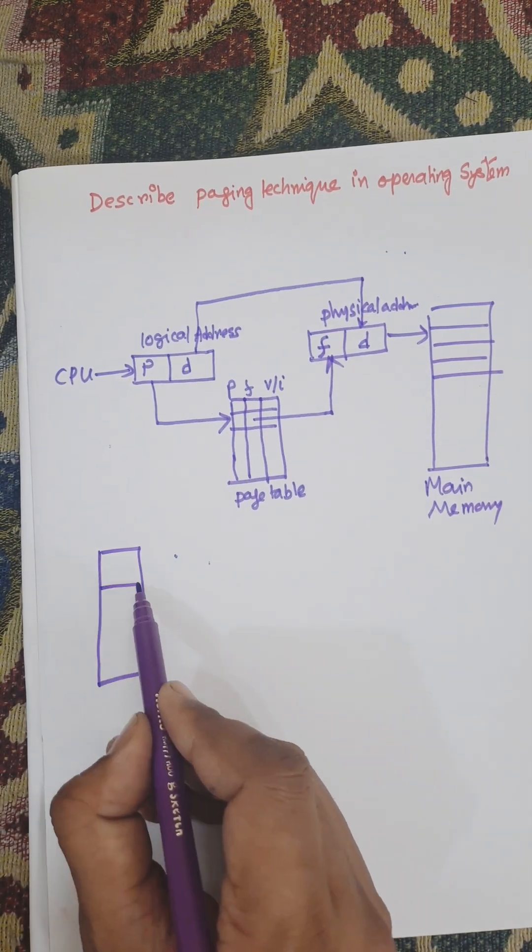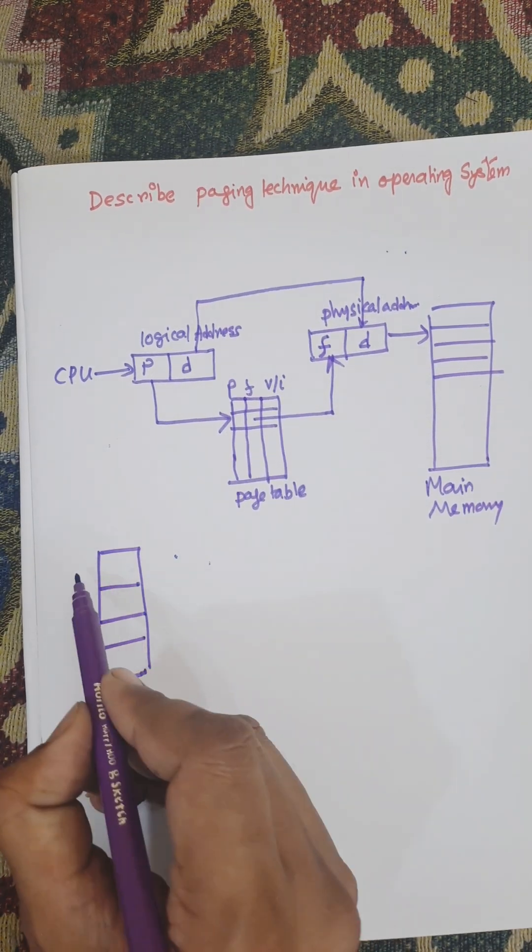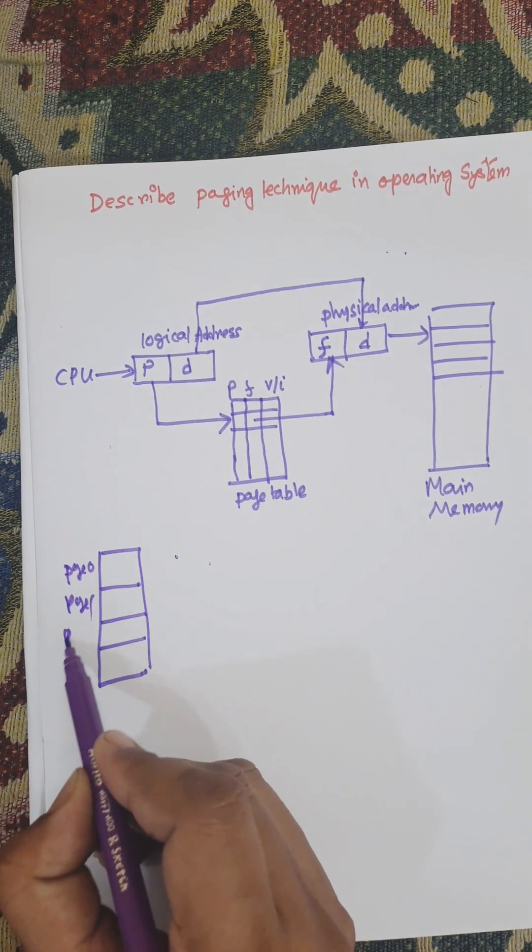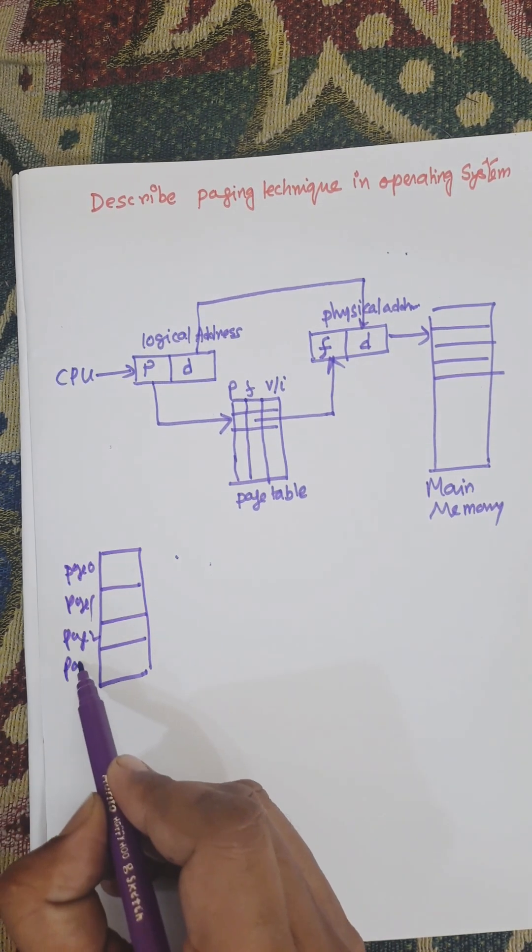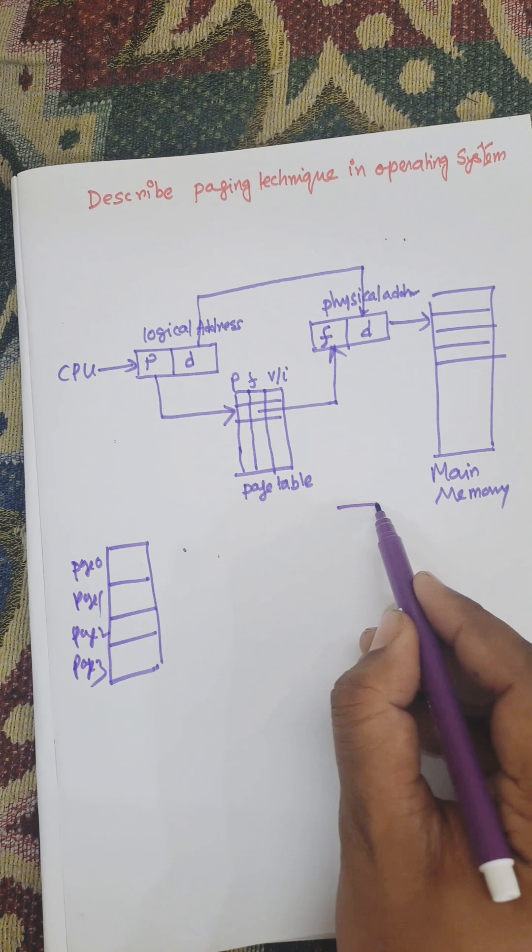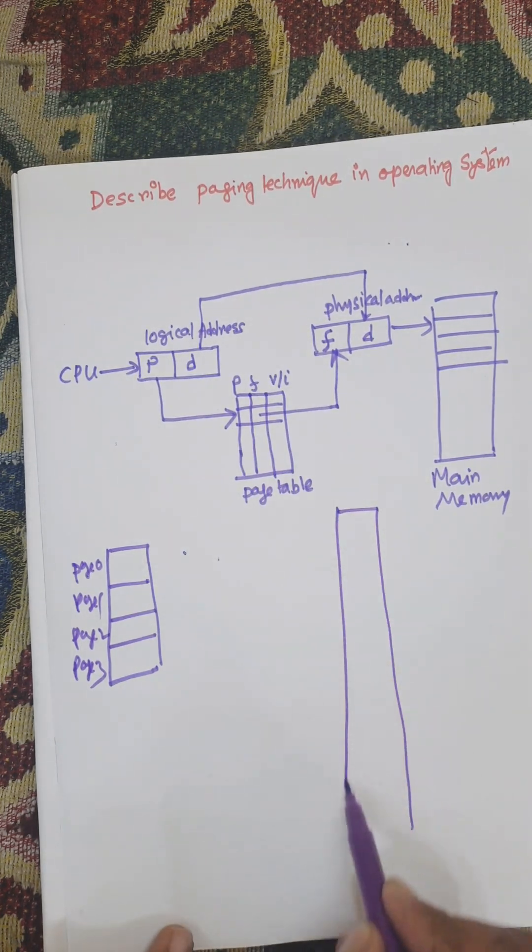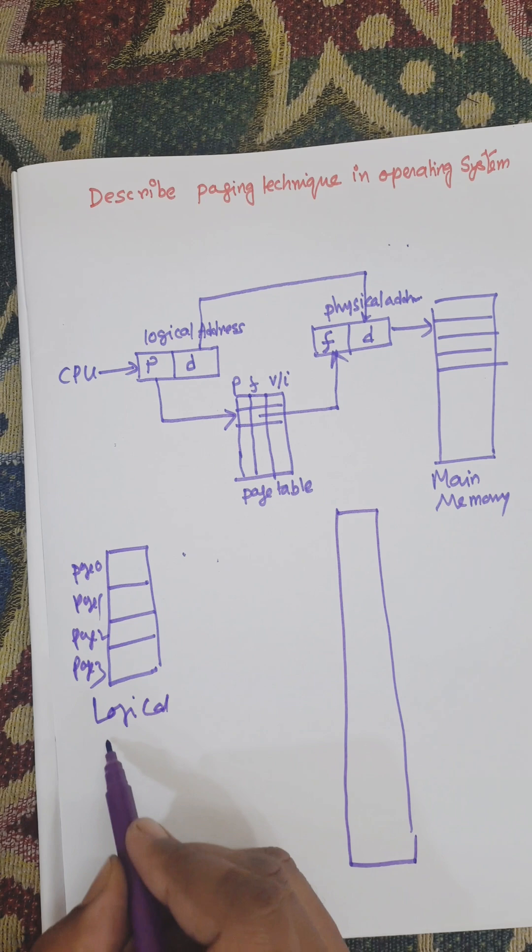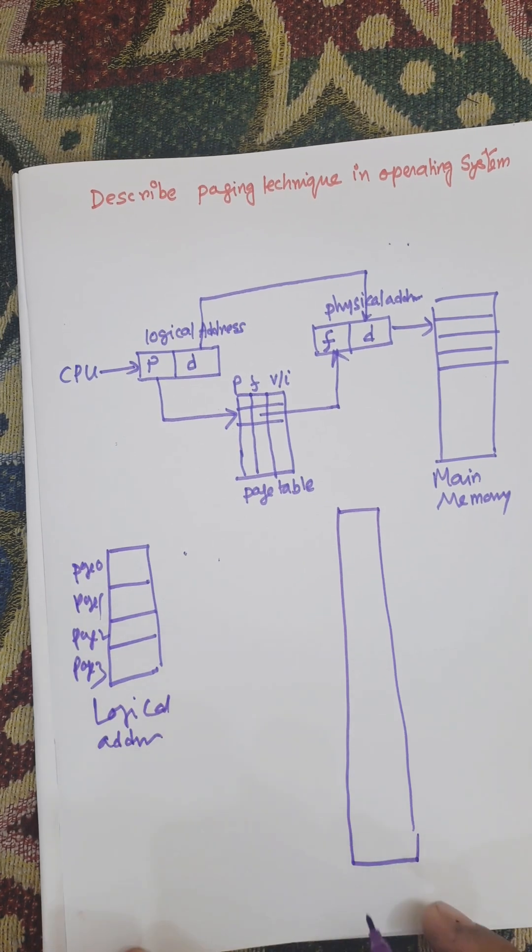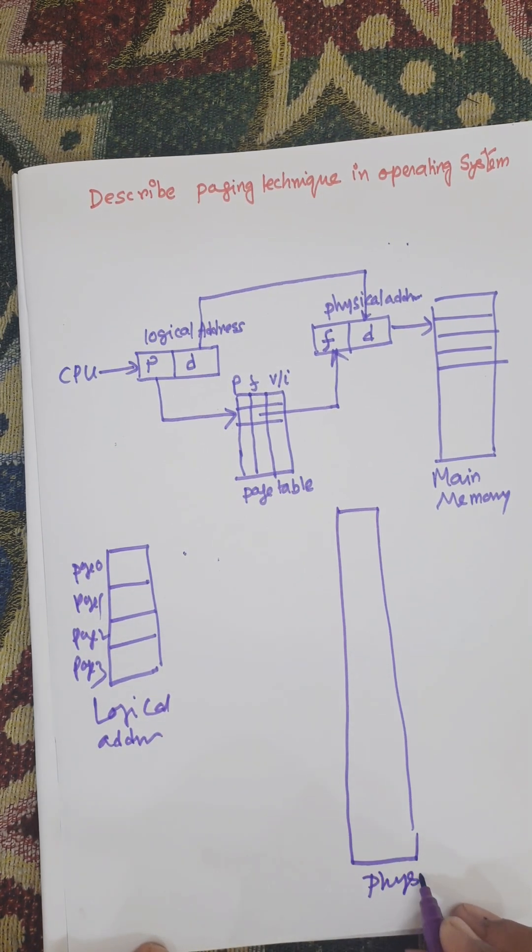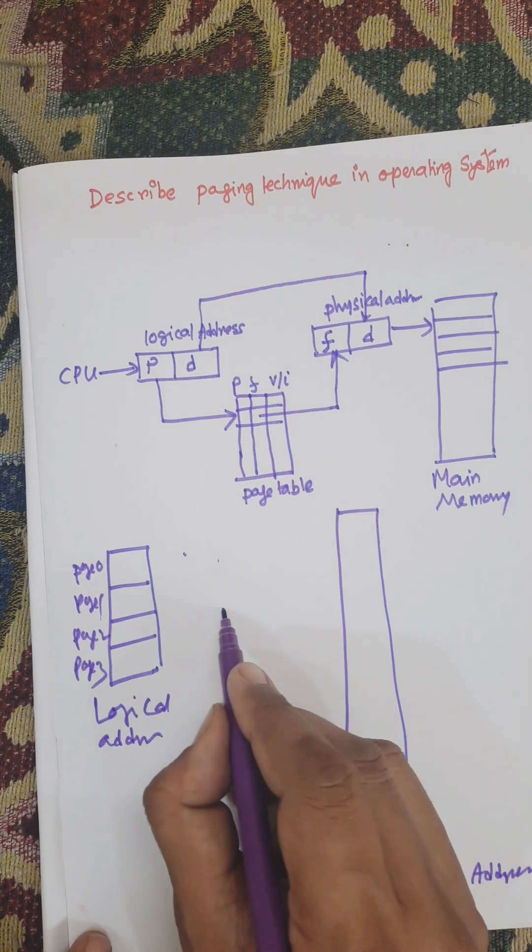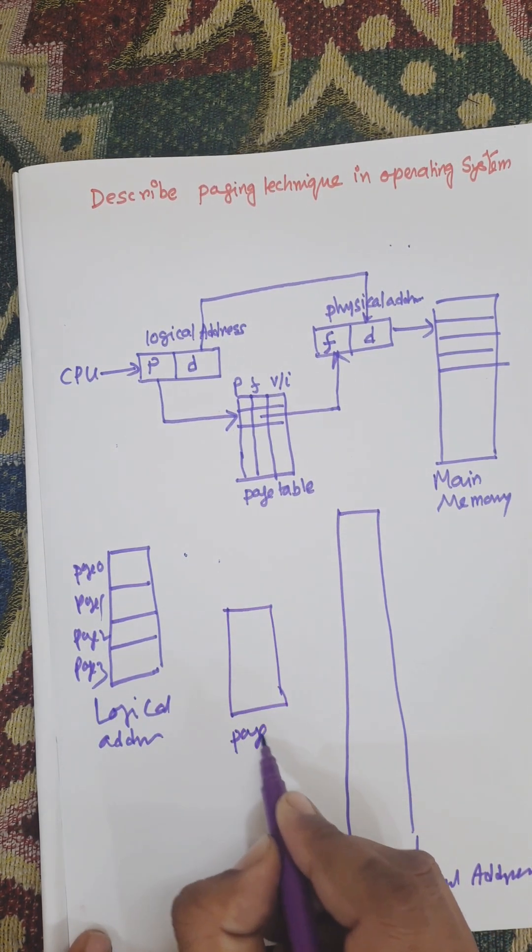So this is the number of pages: page 0, page 1, page 2, page 3. And these are the memory, main memory that is the physical address. This is the logical address and this is physical address. This is the page table. Page table resides in the main memory.